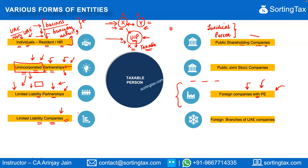Foreign branches of UAE companies would generally be covered as a permanent establishment, and in respect of activities they carry out in the UAE — whether for local or foreign customers — as long as the activity is attributable to those branches, it would be taxable in the UAE.